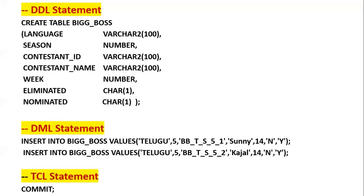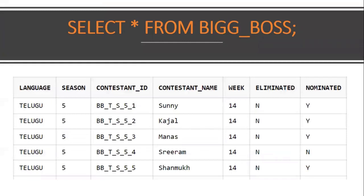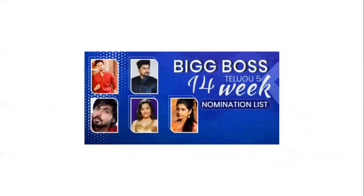This is the sample Big Boss table — SELECT * FROM big_boss gives us: language Telugu, season 5, contestant ID, contestant name, particular week, and whether the contestant has been eliminated or nominated. For the first requirement, we need to display the list of nominated contestants for the 14th week, which gives four records: Sunny, Kausal, Sriram, and Shanmukh. We also check that the contestant has not been eliminated — if eliminated, they won't appear in the nominated candidate list.